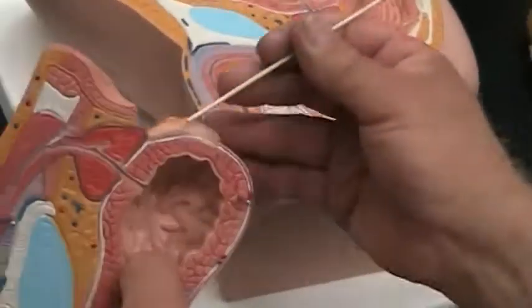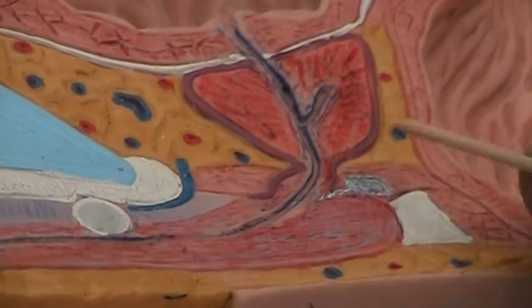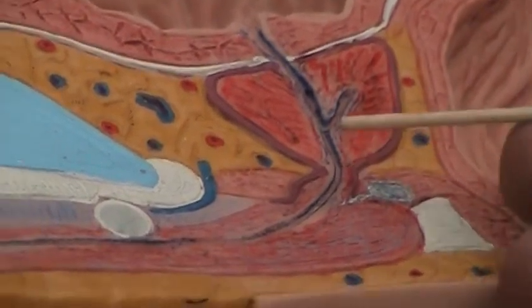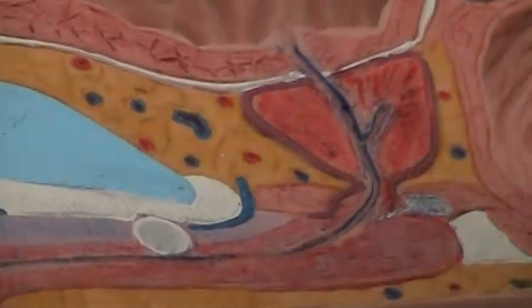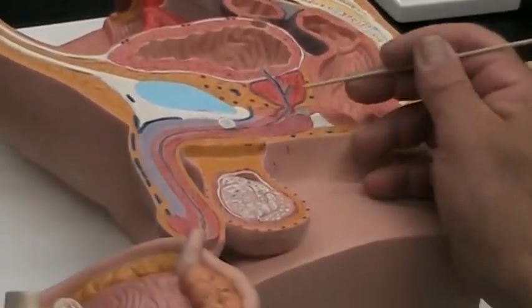But it's actually coming from here and it's going all the way through. Here is the bulbourethral gland or Cowper's gland, which is really inaccurate. It should be lateral to this, not behind it, but I guess they just attempted to, there it is. But that's the location only lateral.